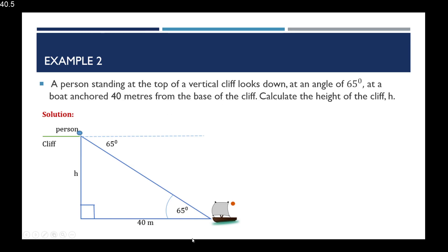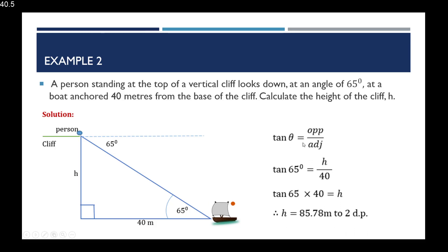To calculate the height of the cliff: with reference to the 65 degree angle, the 40 meters is the adjacent side and H is the opposite side. We need a trig ratio with opposite and adjacent, so we use tan theta. Tan 65 degrees equals H over 40, so H equals tan 65 multiplied by 40, which gives H equals 85.78 meters to two decimal places.